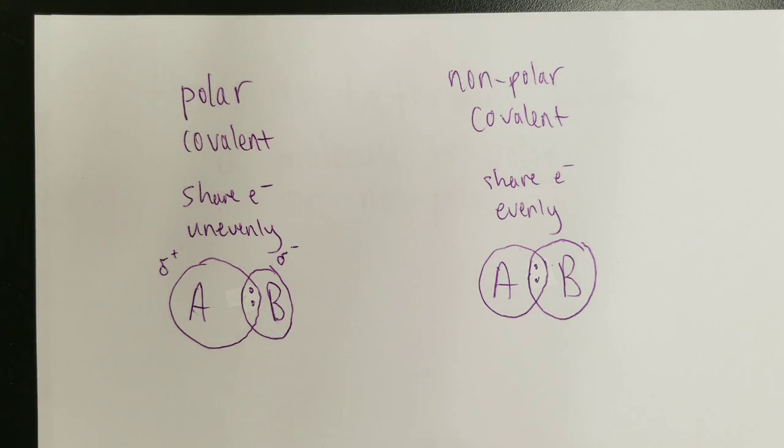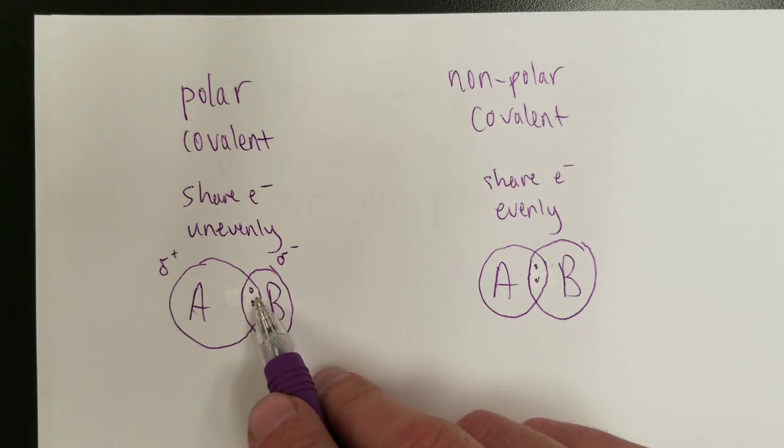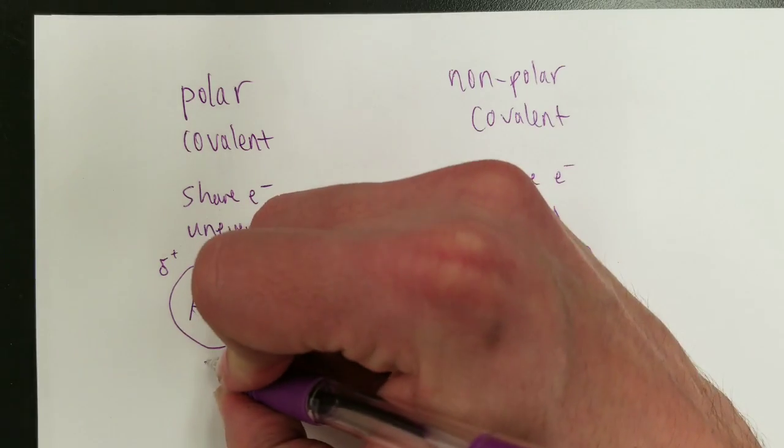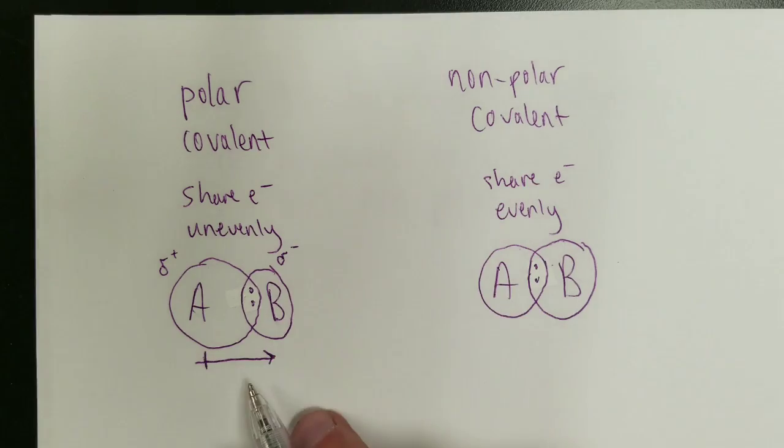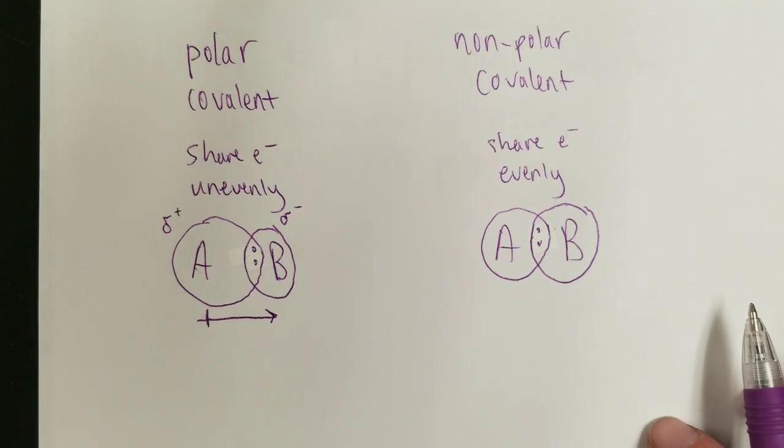So the consequence here is that we've got partial charges because the electrons are being pulled in one direction. Another way to represent it is the electrons being pulled this way, leaving behind some positive charge. This is the dipole symbol.